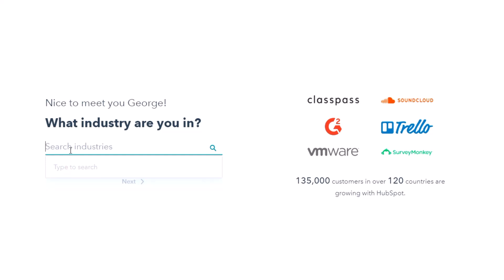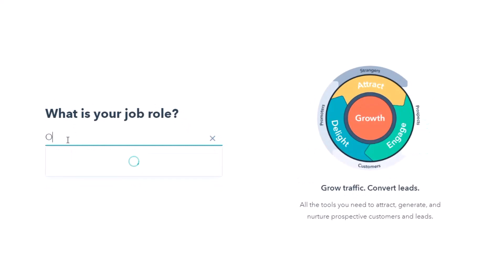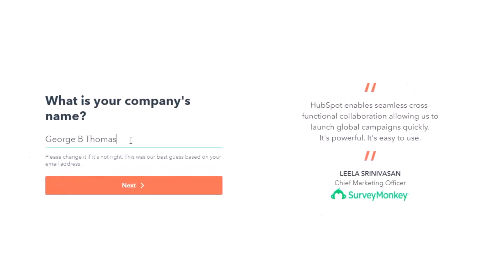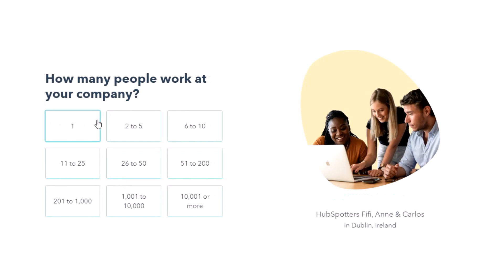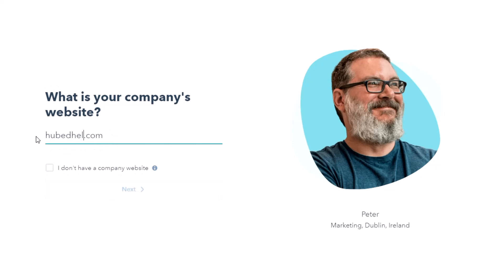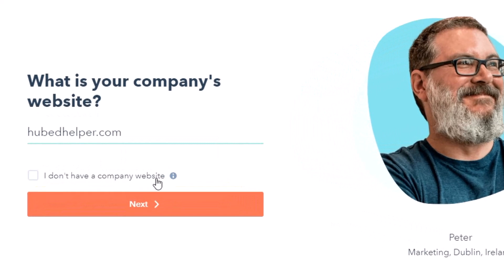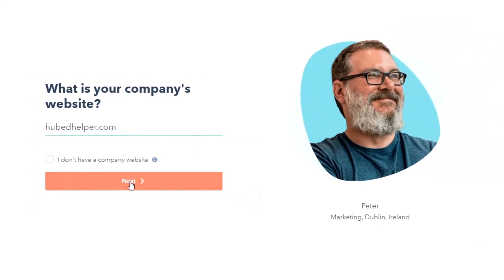You're going to walk through industry — we'll do marketing and advertising — and then what is your job role? We'll say owner. We'll hit next. What's your company's name? We're going to do HubEdHelper and hit next. How many people work at your company? We'll say one. What is your company's website? We'll put HubEdHelper.com. Notice there's also an option that says 'I don't have a company website' if you're truly just starting out — you can connect a website address later. We'll do HubEdHelper.com and hit next.